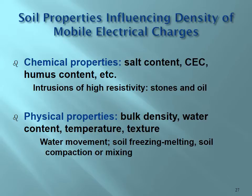It's important to consider what properties can be measured with electrical resistivity techniques. Those properties are directly related to the density and mobility of mobile electrical charges. Chemical properties include soil salt content, CEC, and humus content. Intrusions of high-resistivity objects in soil like stones or oil can be mapped very precisely. Physical properties influencing charge mobility include bulk density, water content, temperature, and soil texture, allowing us to monitor physical changes like water movement, soil freezing or melting, and soil compaction.